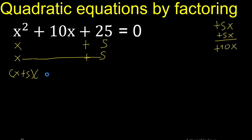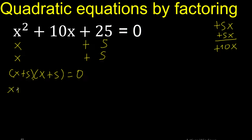So we have equal 0. By the zero product property, this factor equals 0, or this factor equals 0.